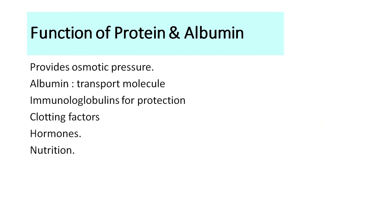Before we understand how proteins and albumins are estimated, we should know their functions in the blood. Proteins provide osmotic pressure, which holds fluid within blood vessels to maintain blood volume and blood pressure. Albumin is an important transport medium — it transports bilirubin and various other substances. Proteins contain immunoglobulins used for protection and immunity, and all clotting factors are proteins. Proteins also function as hormones — like insulin — and serve as nutrition and buffers for blood pH regulation.